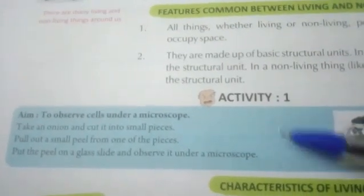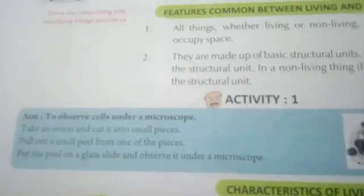We will make a slide and then observe it under the microscope to see the cells. The procedure is: take an onion and cut it into small pieces, then pull out a small peel from one of the pieces. Under the microscope, you will be able to see the small compartment-like structures — and that is the cell.